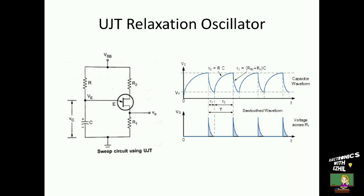Now we will see how the UJT functions as a relaxation oscillator. When the power supply is switched on, capacitor C starts charging towards VBB through resistance R. When the capacitor voltage VC equals the peak voltage VP, UJT fires. Now the capacitor discharges through resistance R1 plus RB1 (the internal resistance of base 1) until it reaches the valley voltage. Once the capacitor voltage equals the valley voltage, UJT goes to the off state and capacitor C starts charging again. This process is repeated to produce the sawtooth waveform across resistance R1.